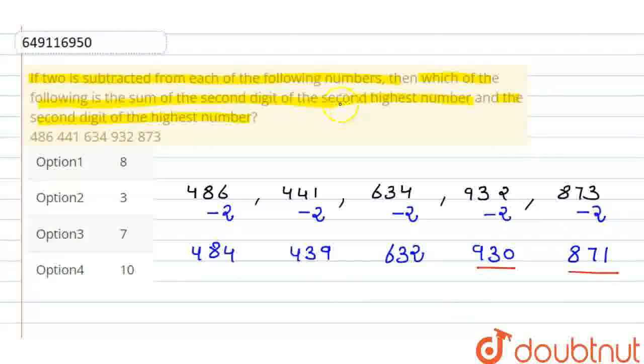For the second highest number, we can see second digit, and for the highest number, we can sum the second digit. So, this will be the second digit, and this will be the second digit.